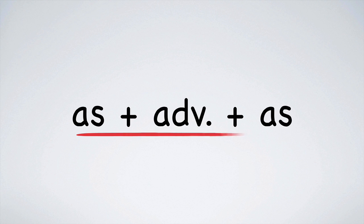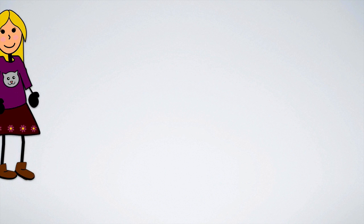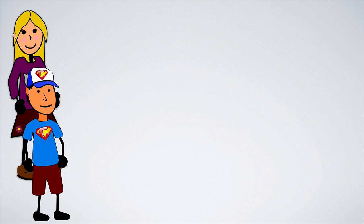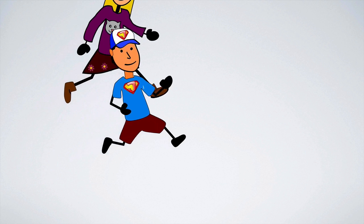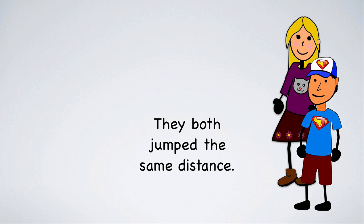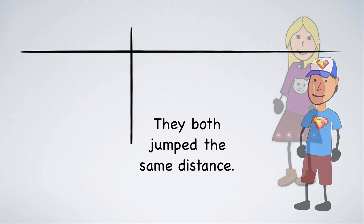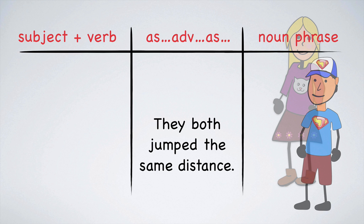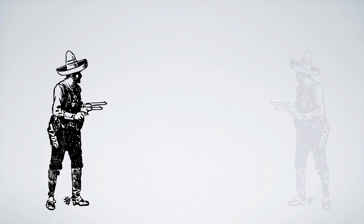Now it's time to work on comparisons with as adverb as, or not as adverb as. Emily, Tyler, could you guys help me with something? Let's see who can jump the furthest. On your marks, get set, go. Wow, it's a tie. You both jump the same distance. The structure should be familiar to you by now. We have subject plus verb, as adverb as, and then a noun phrase. Emily jumped as far as Tyler.